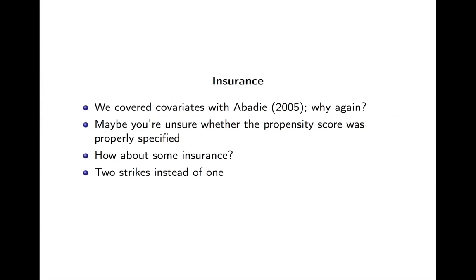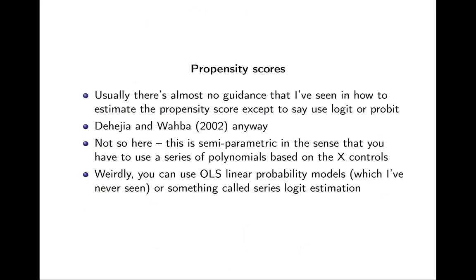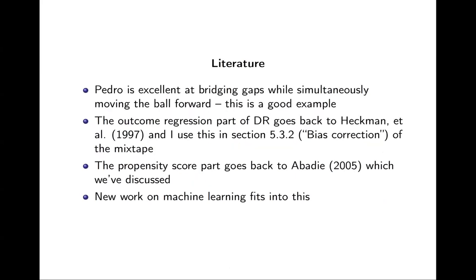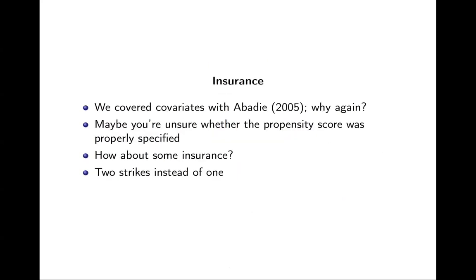We've covered covariates already with Abadie - that's the Abadie estimator you just did for the replication. So why are we discussing doubly robust if we've already done it? Because Abadie A05 assumes that you've correctly specified the propensity score. But what if you haven't? What if you could combine another method that also controls for X, so that you simultaneously control for X two different ways and only need to get one of them right? It's like having two strikes instead of one.